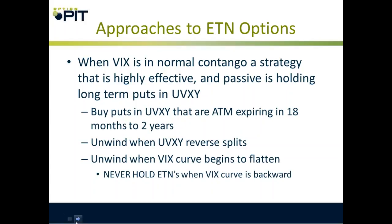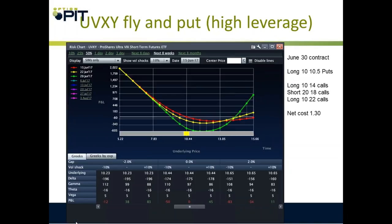Here's a nice trade I like — a UVXY call fly with puts. This is the June 30 contract. I'm long 10 of the 10.5 puts, long 10 of the 14 calls, short 20 of the 18 calls, and long 20 of the 22 calls. My net cost is $1.30. Just a simple near-term short-UVXY long butterfly — a super simple trade we do in our strategy letter all the time.